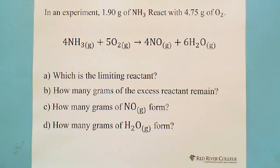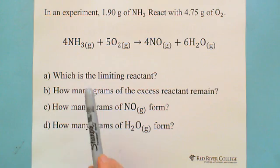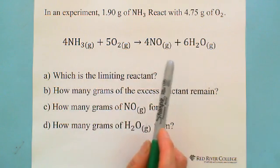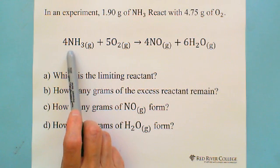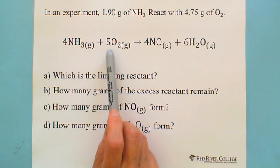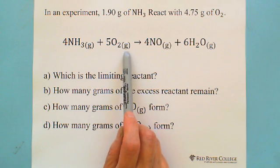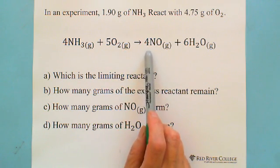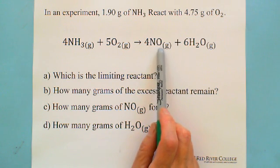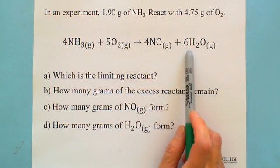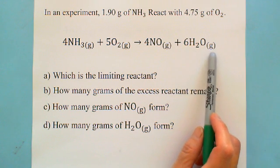In an experiment, 1.90 grams of ammonia (NH3) react with 4.75 grams of oxygen. The reaction equation is already given and also already balanced. So 4 moles of ammonia gas react with 5 moles of oxygen gas, which will produce 4 moles of nitrogen monoxide gas, plus 6 moles of water vapor.